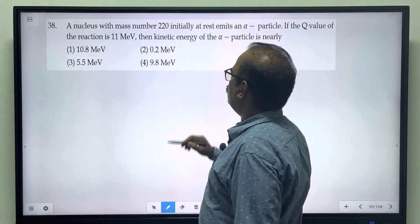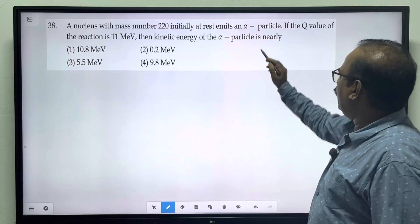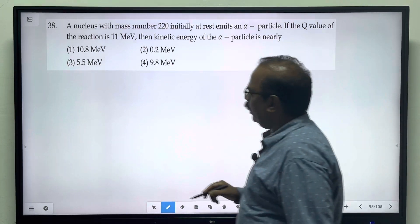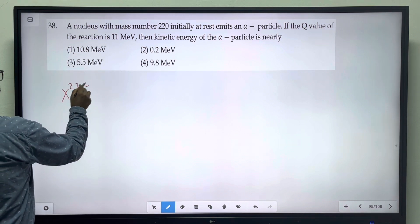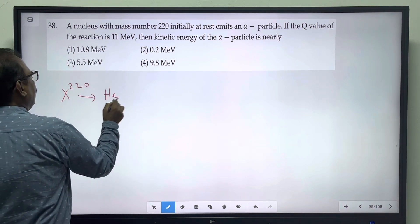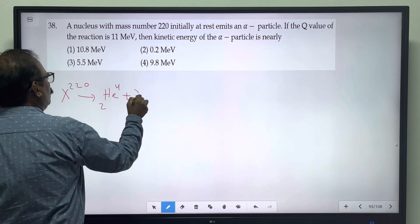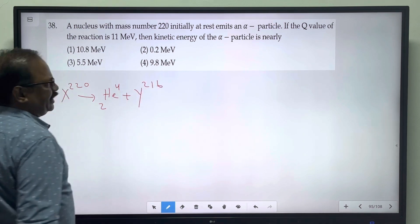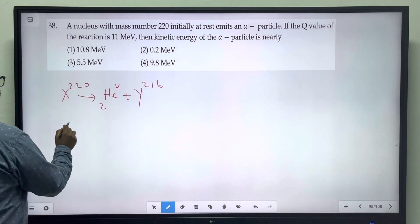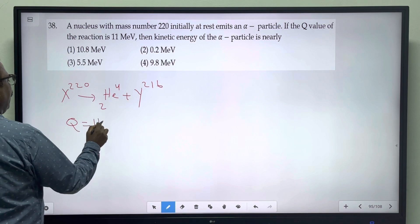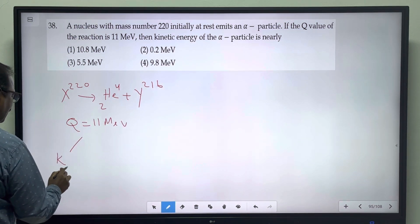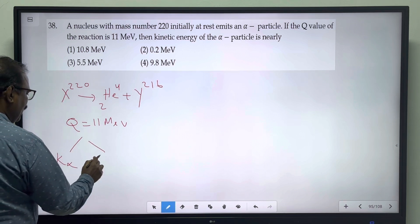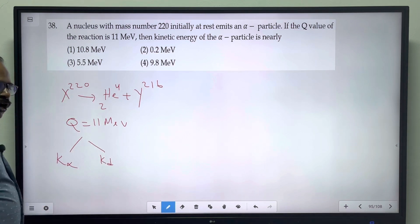A nucleus with mass number 220 initially at rest emits an alpha particle. One nucleus with mass number 220 emits an alpha particle. The remaining nucleus has mass number 216. The total energy released is 11 mega electron volt. This energy will be partly available as kinetic energy with the alpha particle and partly available with the daughter nucleus.